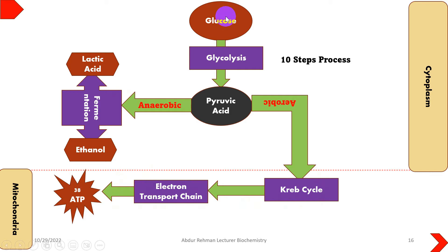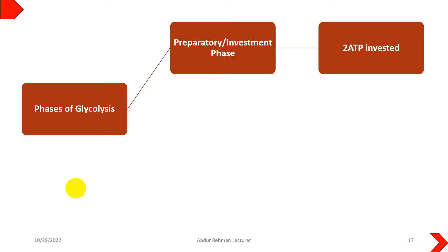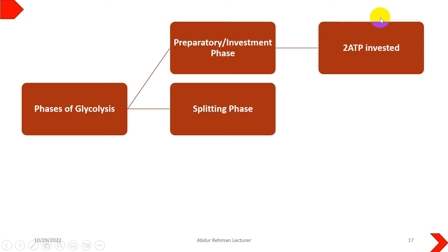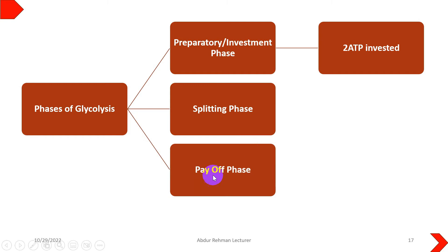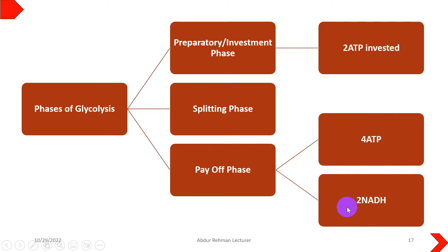A single glucose molecule will result in the production of 38 ATP. Looking at the phases of glycolysis, there are three basic phases: the preparatory phase or investment phase, in which we invest about two ATPs; the splitting phase, where the six-carbon molecule of glucose is split into two three-carbon molecules; and then the payoff phase, where we get four ATP molecules regenerated and two NADH molecules. NADH is also a rich source of ATP, which will be utilized for ATP production during the electron transport chain in the aerobic pathway.